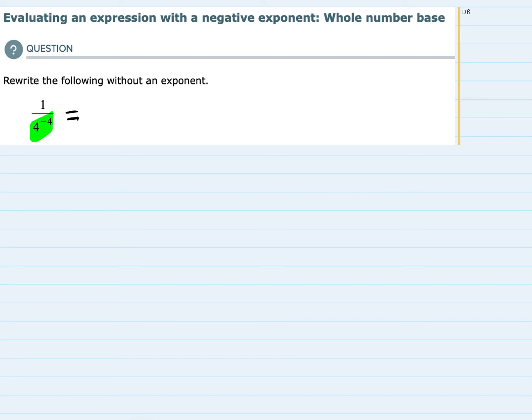So I'm going to rewrite this. I know I have this 1 in the numerator, but I can move this 4 to the negative 4 up to the numerator as a 4 to the positive 4. So I've turned that negative exponent into a positive exponent.